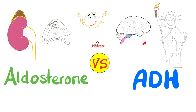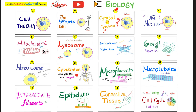Antidiuretic hormone comes from the hypothalamus in your brain, but aldosterone comes from the cortex of your adrenal medulla, which sits on top of that kidney. Antidiuretic hormone reabsorbs water only, but aldosterone reabsorbs salt and water.